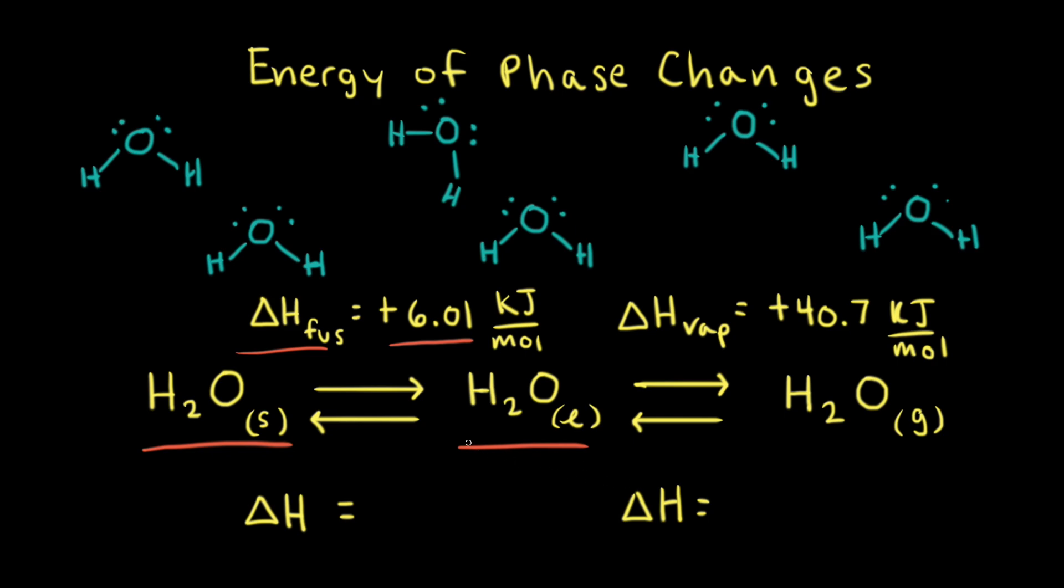Next, let's think about the phase change of converting liquid water into gaseous water. This phase change is called vaporization and it also takes energy to convert liquid water into gaseous water. Specifically for water, it takes 40.7 kilojoules per one mole of liquid water to vaporize it. And so this change in energy is called the enthalpy of vaporization or simply the heat of vaporization.